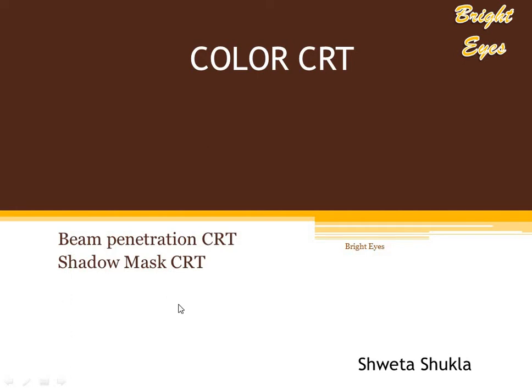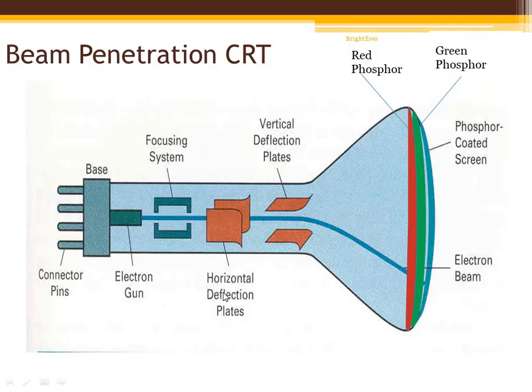Welcome viewers. Today I will tell you about color CRT technology. CRT was the most important display technology for color TVs and computer monitors, and it was the dominant display technology until LCD and plasma panel displays. We will discuss how color CRT works. There are basically two types of technologies for color CRT: beam penetration CRT and shadow mask CRT.